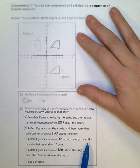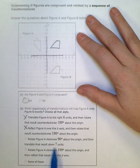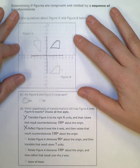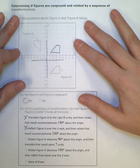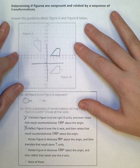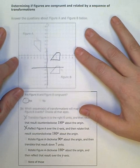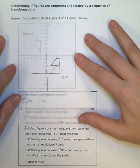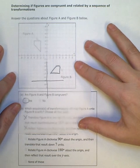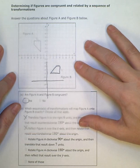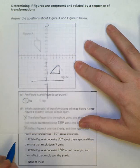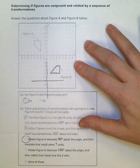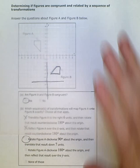And then translate that result down seven units. So one, two, three, four, five, six, seven. That looks like it's going to do it. Definitely a possibility on that one. That one looks like it works. I'm going to check the last one.